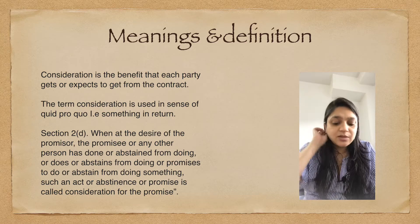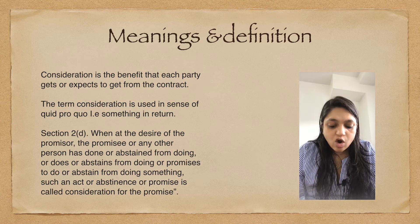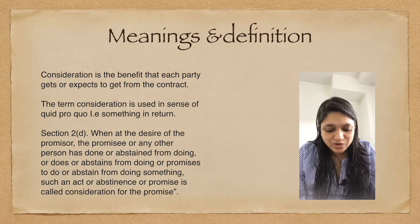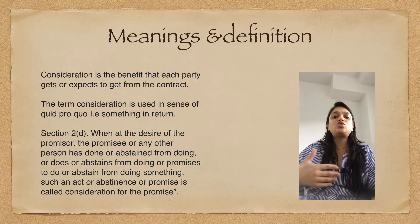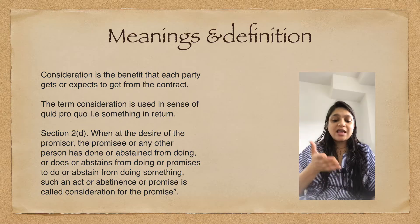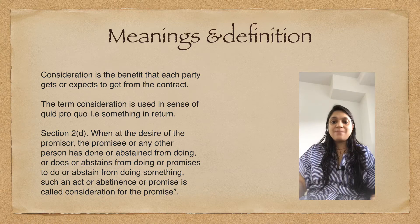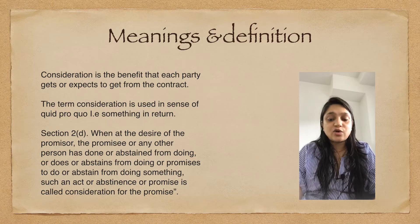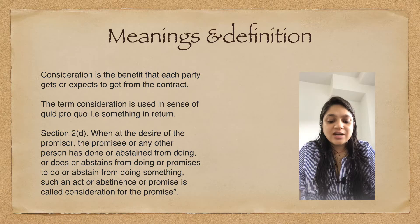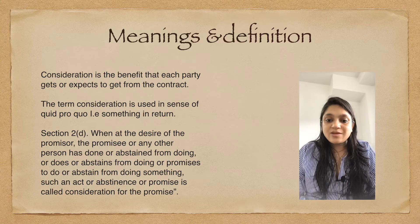Now looking at the Section 2(d) definition: 'When at the desire of the promisor, the promisee or any other person has done or abstained from doing, or does or abstains from doing, or promises to do or abstain from doing, such an act or abstinence or promise is called consideration for the promise.' This means, at the desire of the promisor — A offered 'I want to buy your car' — so at A's desire, if B agrees for five lakh rupees to give his car, then those five lakh rupees are consideration for A, and that car is consideration for B. The consideration must be at the desire of the promisor, and it can be given by the promisee or by any other person on behalf of the promisee — that is also a valid consideration.